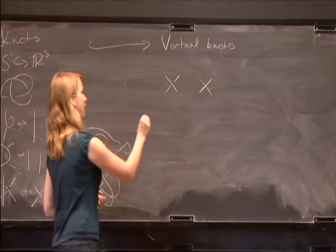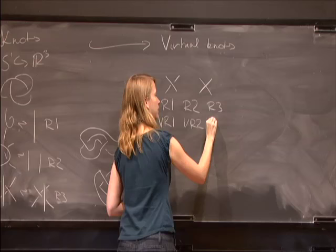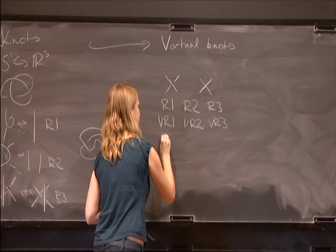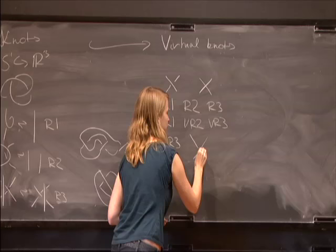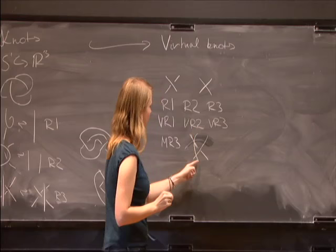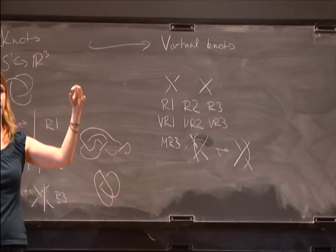You have regular Reidemeister 1, Reidemeister 2, Reidemeister 3. Also, you will have virtual versions of all of these, which are just the exact same pictures, except virtual crossings instead of the crossing. And also, you have a mixed Reidemeister 3, which means that if you have a regular crossing and this strand that goes from one side to the other, then you can move this strand to the other side. So basically, you can reroute any purely virtual thing to anywhere else, purely virtually.